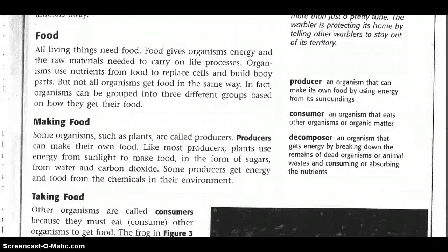All living things need food. Food gives organisms energy and the raw materials needed to carry on life processes. Organisms use nutrients from food to replace cells and build body parts. But not all organisms get food in the same way. In fact, organisms can be grouped into three different groups based on how they get their food.